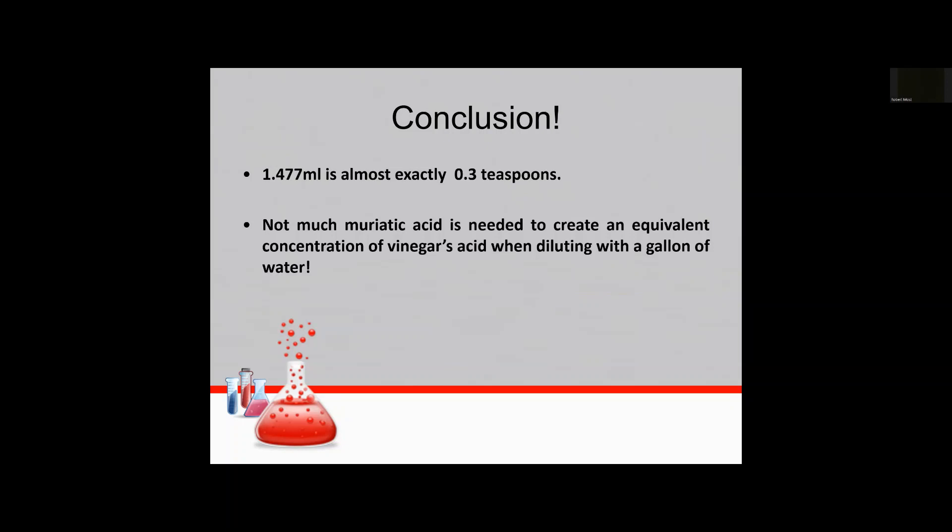And if you have a gallon of muriatic acid, boy it would take you a long time to continuously dilute that down to an equivalent concentration of hydrogen ions in a gallon of vinegar. So I hope these calculations helped you out in understanding what to do and I had fun calculating them and I hope that you can take this the next step. Thank you very much.